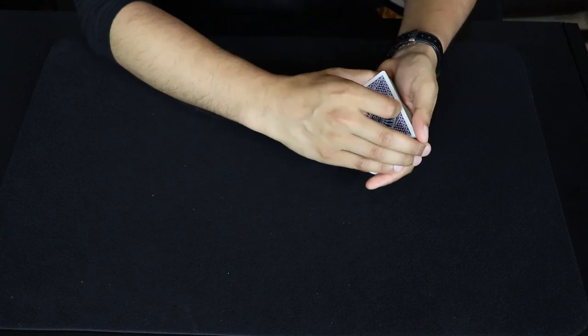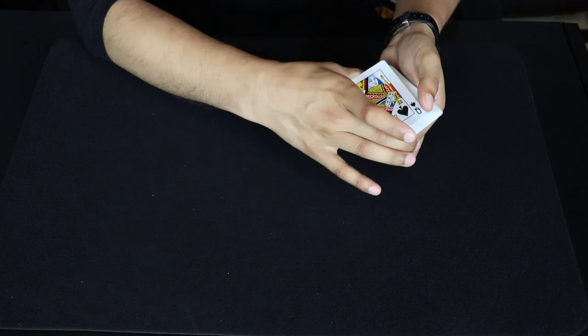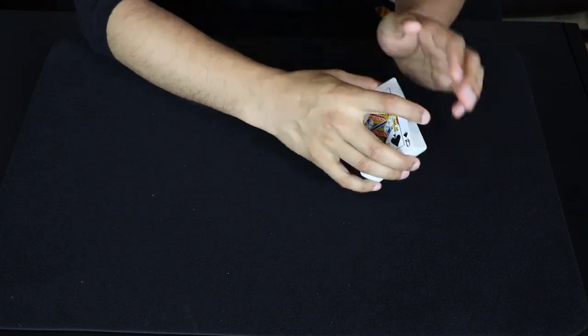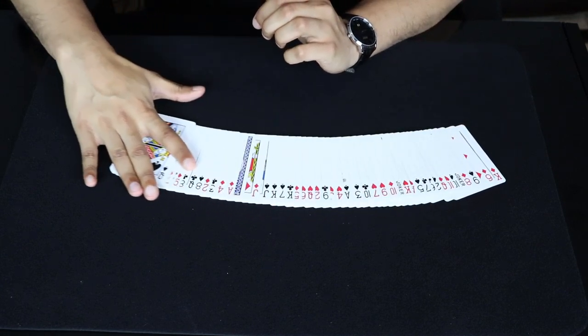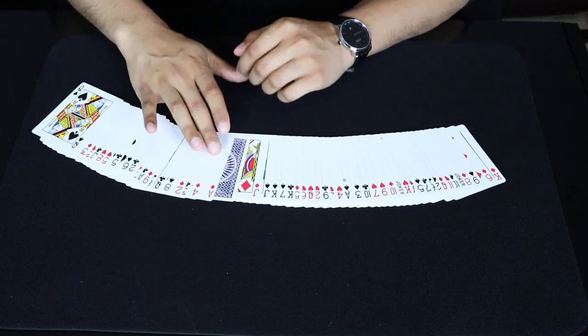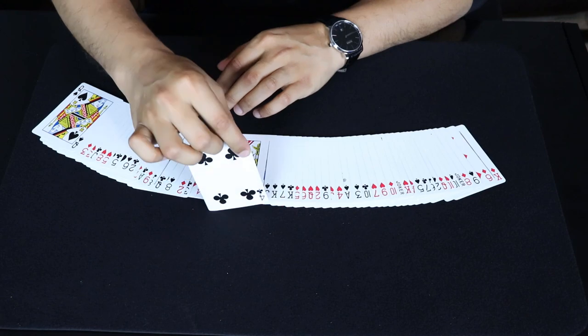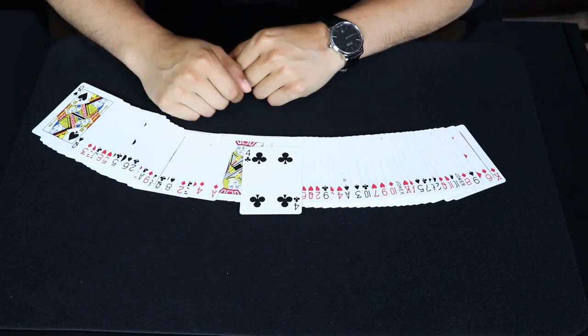Now watch, here's where the really cool thing happens. If I just snap the deck, we'll see that the entire deck turns face up, except for that one card, which is the four of clubs.